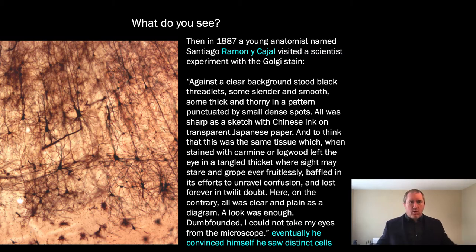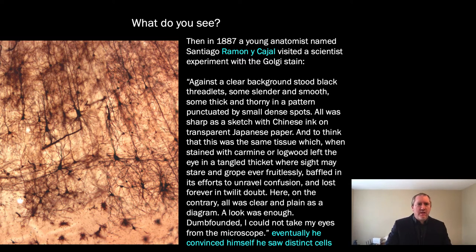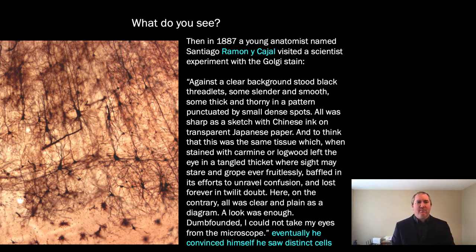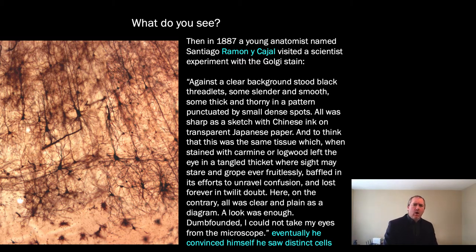Golgi is also known for discovering the Golgi apparatus or Golgi complex. He developed this Golgi stain, which allowed scientists for the first time to look at individual cells in certain tissues, including brain tissue. From his analysis of brain tissue, he became convinced that the brain functioned as a perineuronal net — meaning all brain cells are connected and likely communicate using electricity. He wasn't completely wrong, a point I will come back to. But Ramon y Cajal used the same stain and came to a very different conclusion.